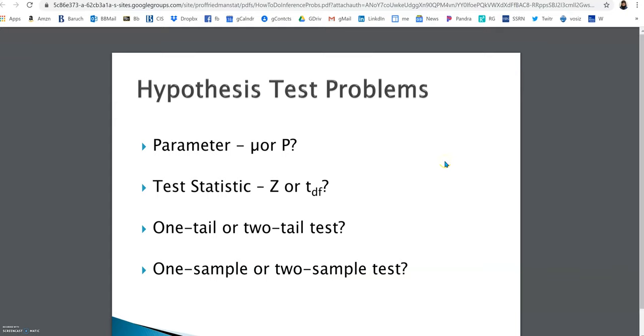But you might need some kind of a guide to help you figure out when you read a problem, what kind of problem is it. And here's your guide. What's the parameter? We've learned mu and p, the population proportion. What test statistic will you be using, Z or t? Is it a one-tail or a two-tail test? And is it a one-sample or a two-sample test?